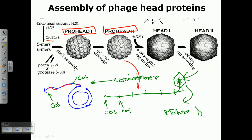After DNA injection into the head, the head is matured and cross-linking of the head is conducted, producing the final injected head 2. If double-stranded DNA is not injected inside pro head 2, the pro head is disassembled and dissociated. It is therefore very important that the dsDNA is inserted inside the pro head.